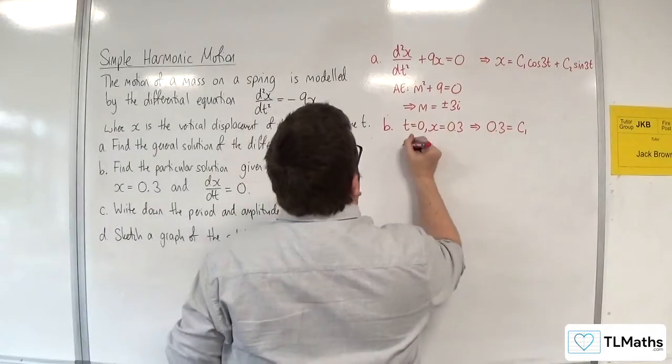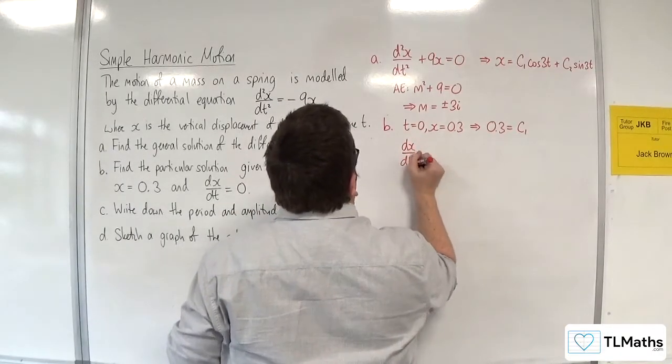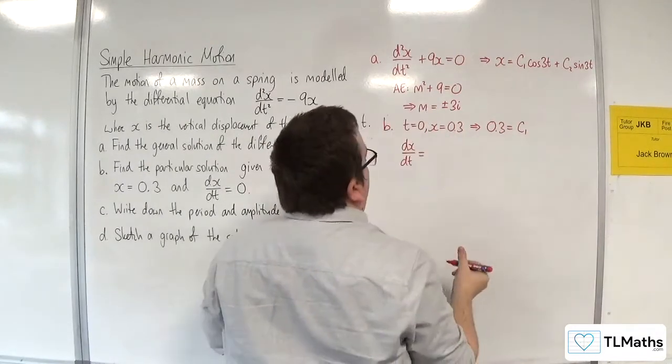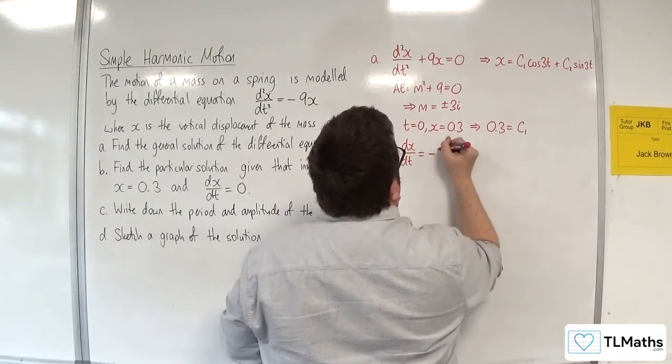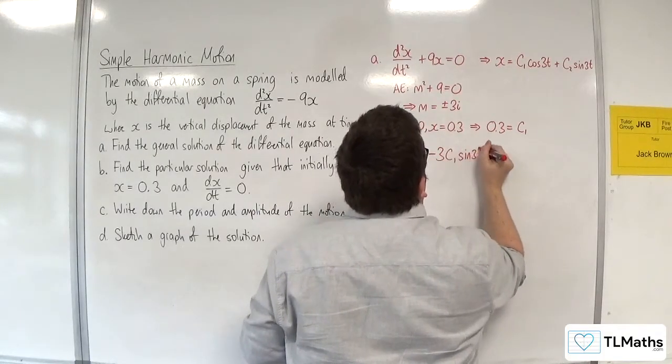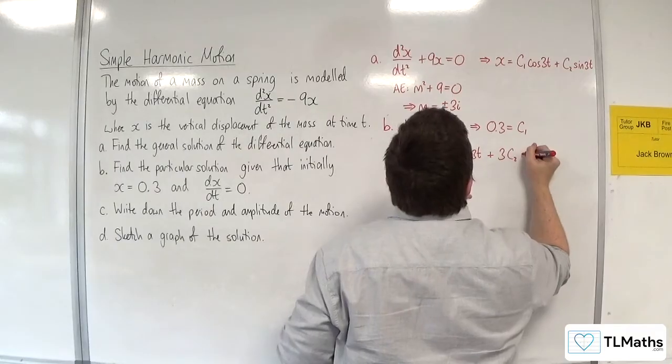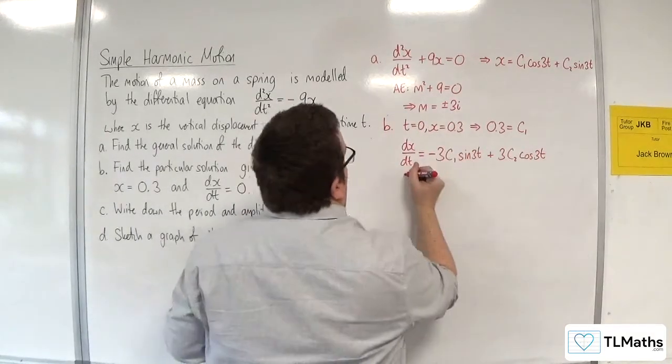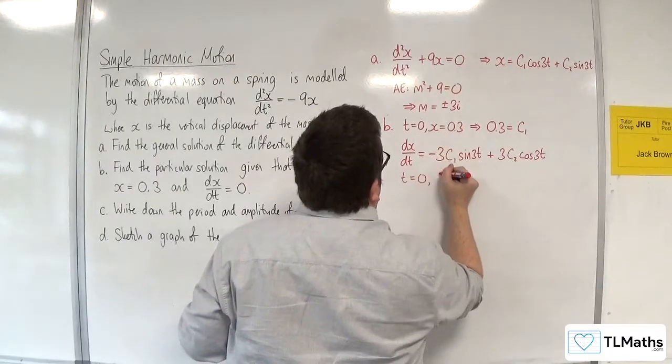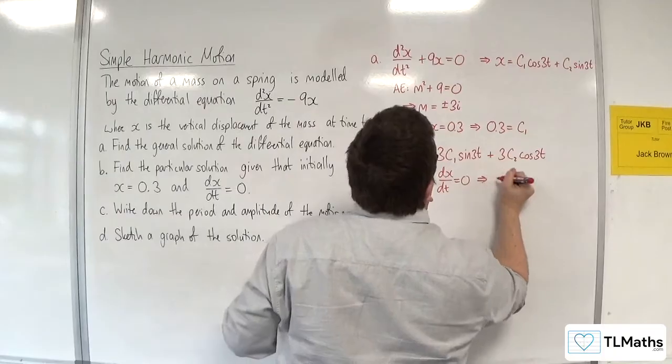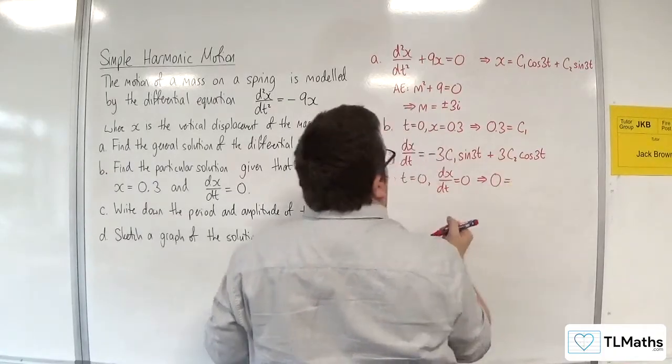Now, I need to find dx by dt in order to do the next bit, so I need to differentiate this. So we would get minus 3c1 sine of 3t plus 3c2 cosine of 3t. So initially, dx by dt is 0.